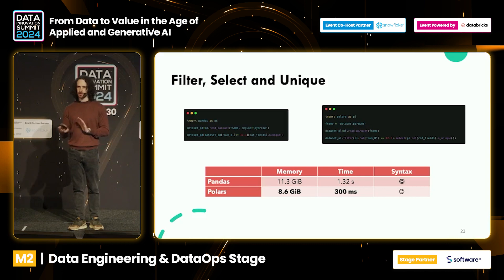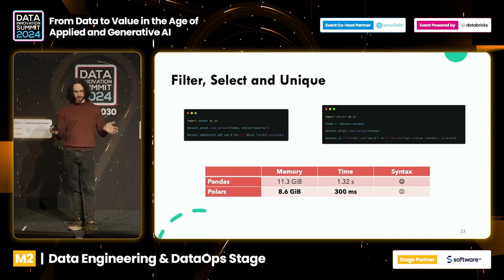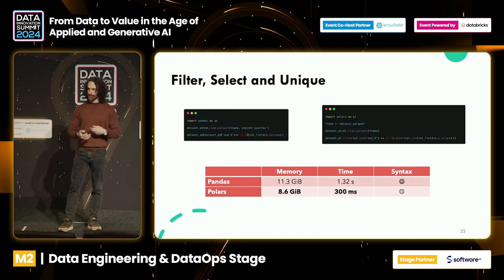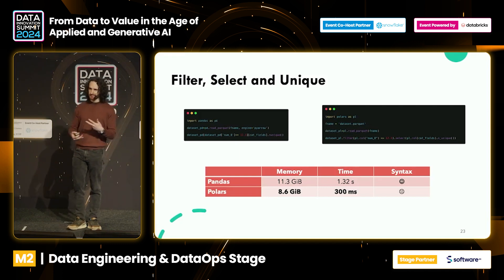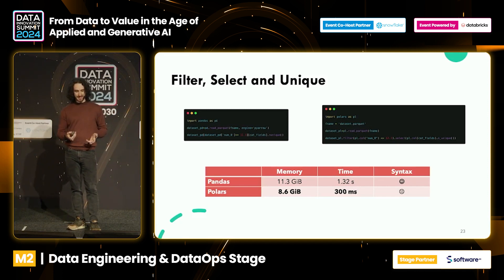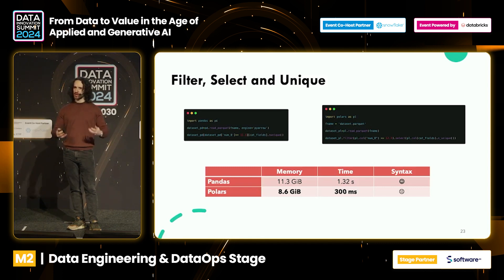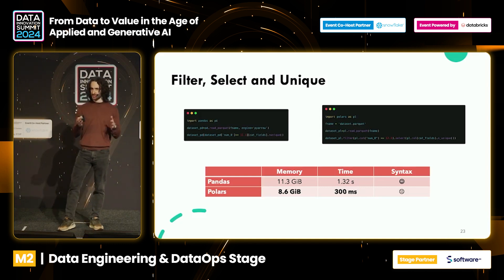Moving to filter, select, and unique — also very common operations. I'm not a big fan of this syntax; I'm coming from Pandas and I'm used to how Pandas works. When I see the 'pl.col()' operator in Polars it's very far from my taste — I just don't like it. But if we look at the performance, Polars is still the winner. I don't like the syntax, but it takes one second less.